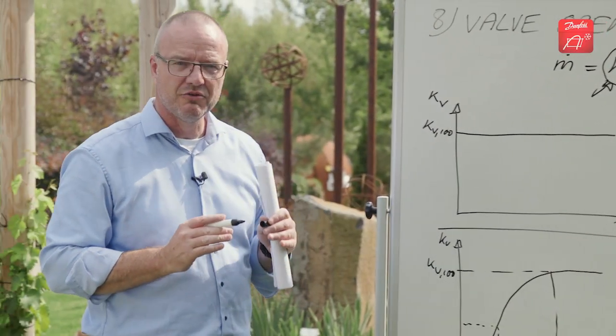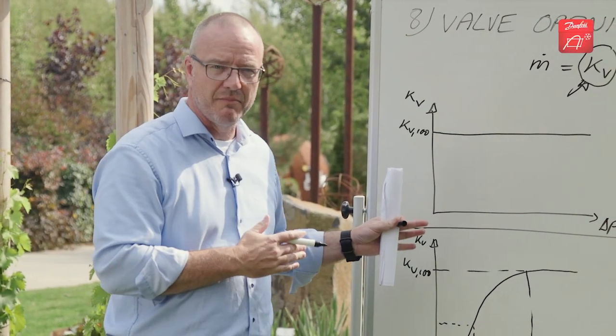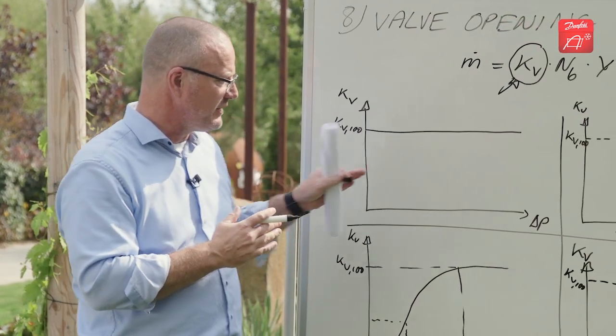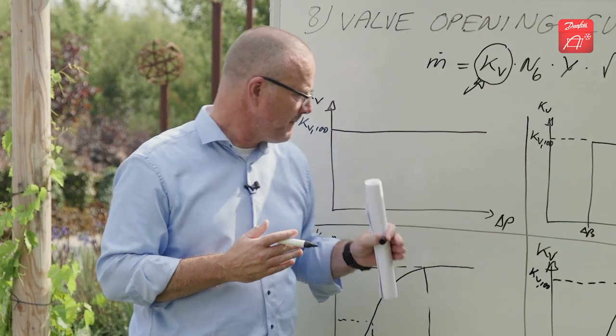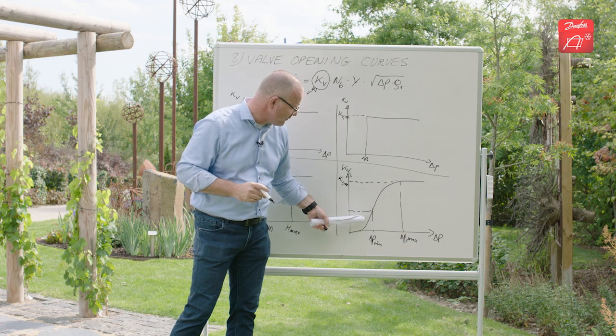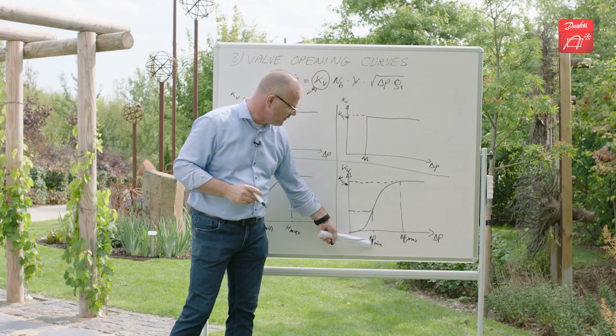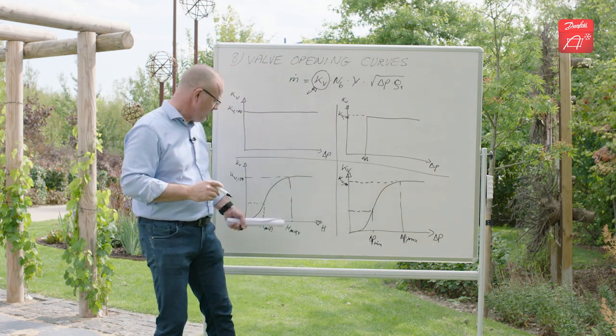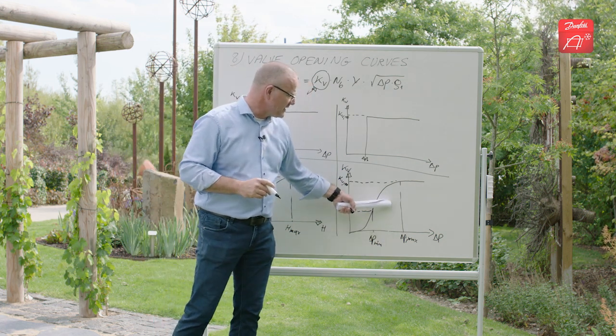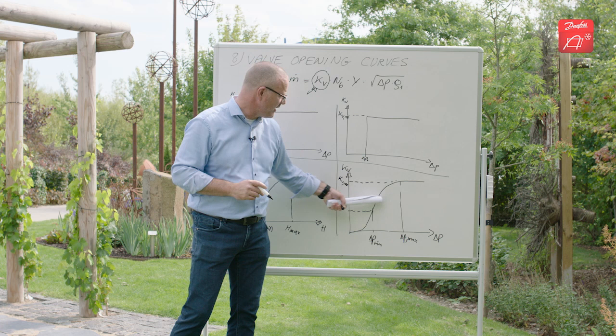But using CoolSelector, you do not necessarily need to care much about this. CoolSelector will take care of all of this. It will calculate the opening curves depending on the valve type you select. The only thing you need to know is that CoolSelector will report whether you are below the minimum opening pressure drop or below the minimum opening here, whether you are inside the partially open area like here.